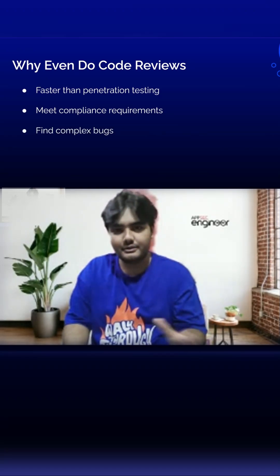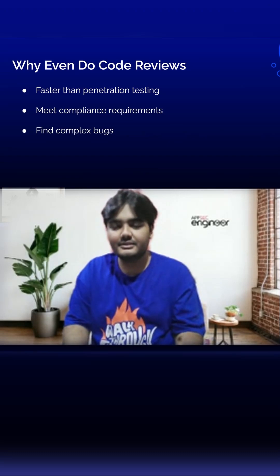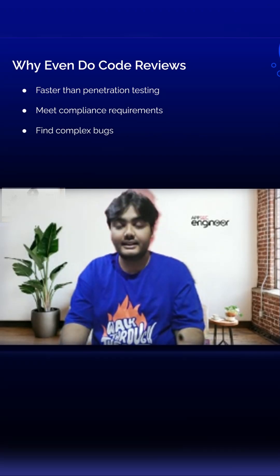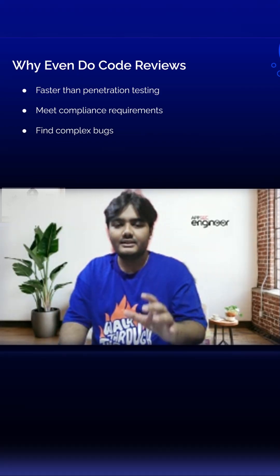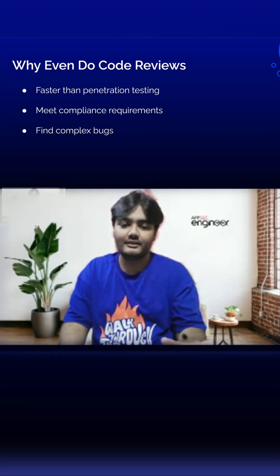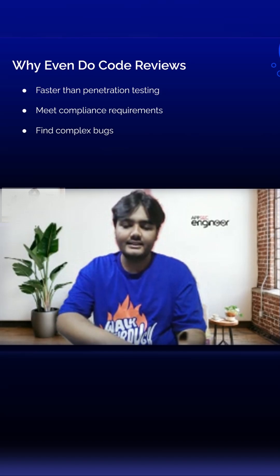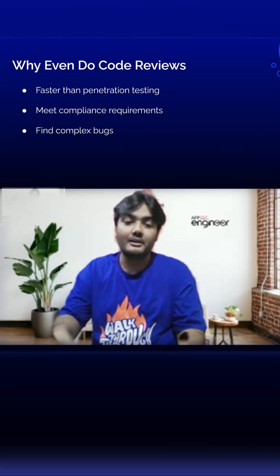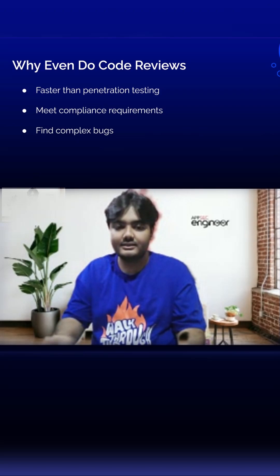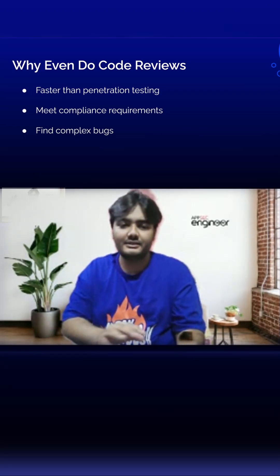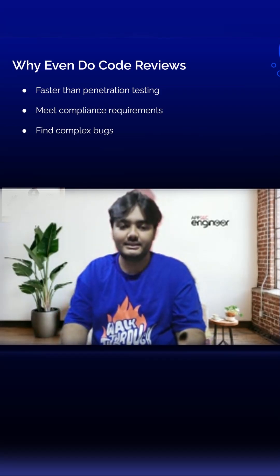Finding complex bugs. You can find complex bugs with pen testing as well, but there's a lot of guesswork involved — you're poking around the system, trying to create a mental model and map out all the features of the application. But with code review, you're already given a free hand, so it's very easy to find and chain multiple exploit primitives — basically vulnerabilities with not much impact in themselves, but when chained together they can form a lot of impact. This is called a full chain exploit, and it's much easier to form one when you have the code than when doing pen testing or black box testing.